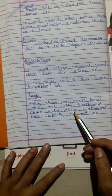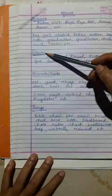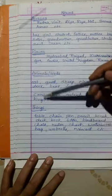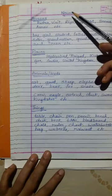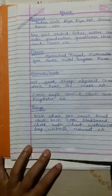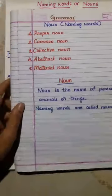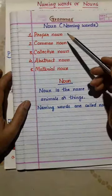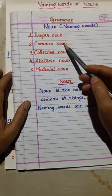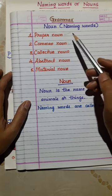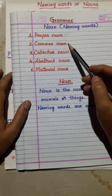Names of persons, places, animals, birds, and things are all called nouns. Now let's see the two types of nouns: proper noun and common noun. First, I will explain common noun.